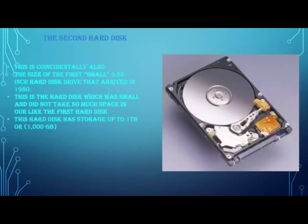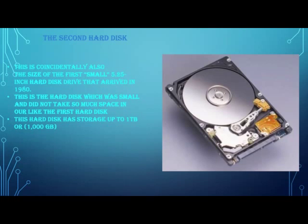After the first hard disk was invented, in 1980 a smaller version arrived. This is the size of the first small 5.25-inch hard disk, which arrived in 1980. It takes up a small amount of space.